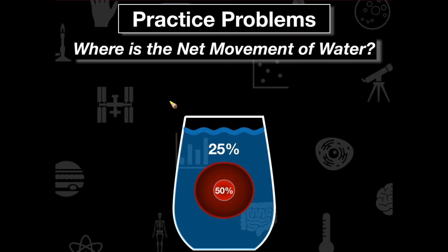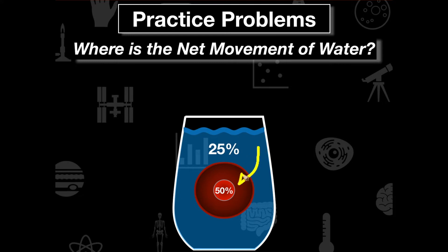Let's look at some practice problems. We have our cell in a glass of water with two percentages. These percentages refer to the percentage of solute in the water and the percentage of solute inside the cell. In this first example, the medium has 25% solute and the cell has 50% solute. Where is there more salt? To equalize the ratio, the water is going to move into the cell.